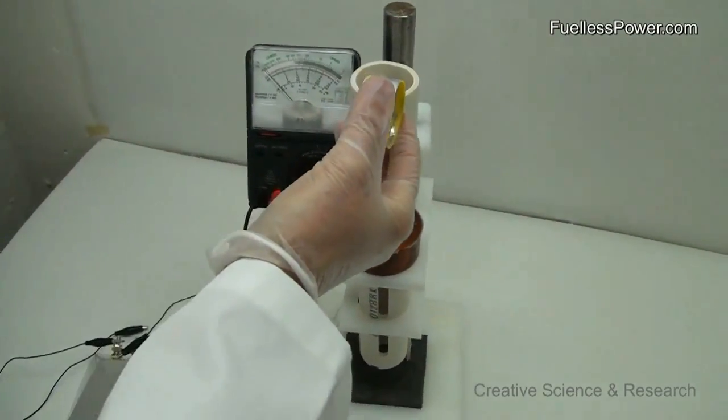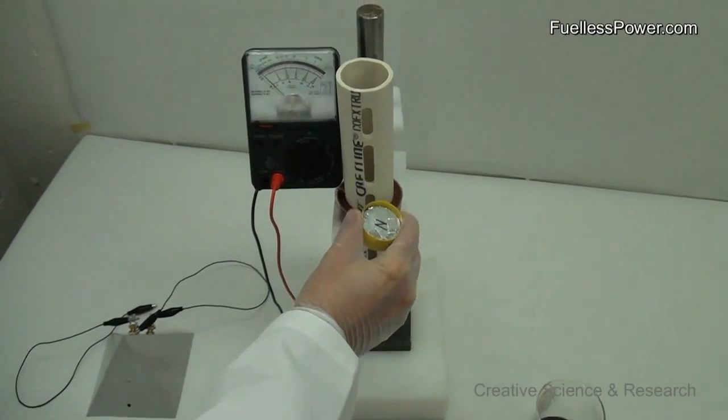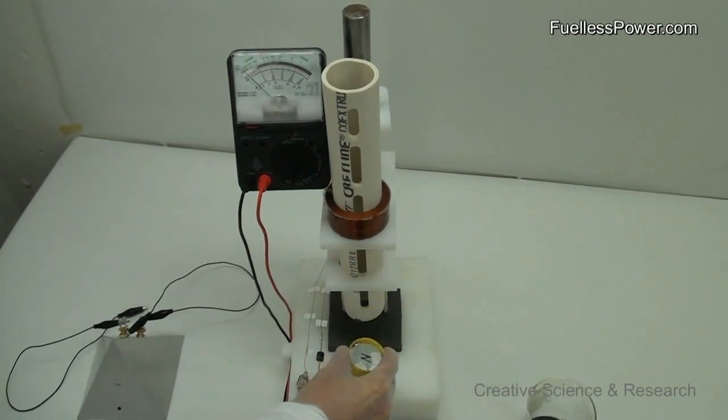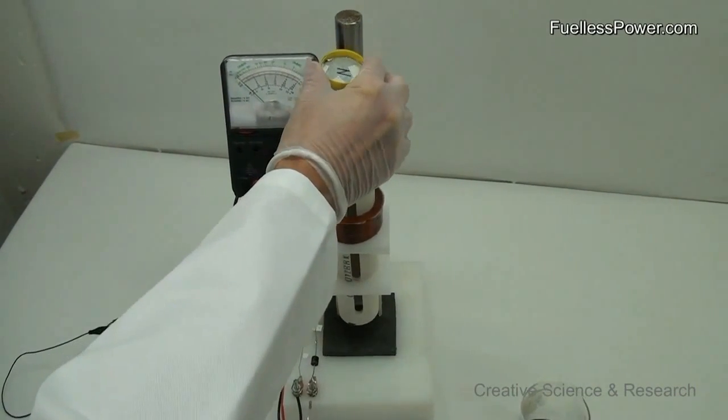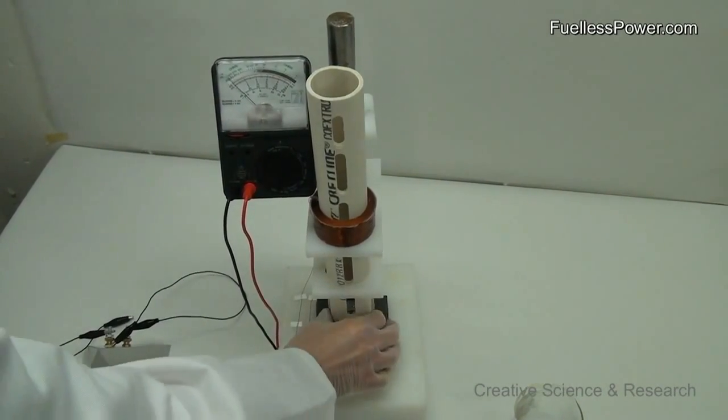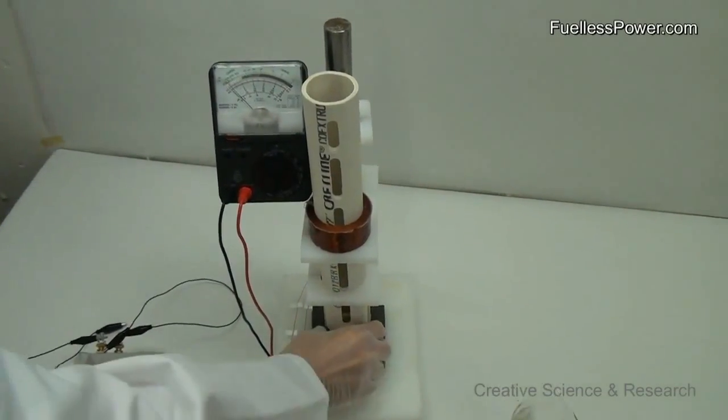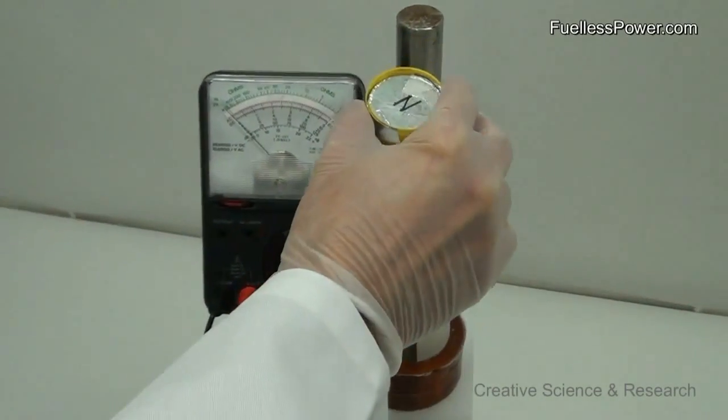Now as the magnet falls through the PVC pipe, it passes the generator coil and generates a small amount of electricity. Now watch the meter. It's not going to move much at all. See that? It's just a regular generator. It's not doing much of anything.